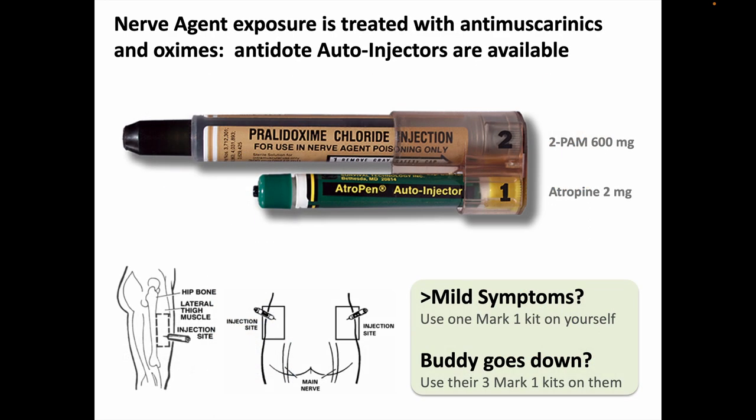Just as with the organophosphorus compound insecticides, nerve agent poisoning can be treated with anti-muscarinic drugs and oximes. For convenience and ease of use with minimal training, atropine and pralidoxime have been packaged into autoinjectors. The Mark I nerve agent antidote kit contains a 600 milligram pralidoxime autoinjector and a 2 milligram atropine autoinjector. Each individual is to be given three Mark I kits to carry if they're at risk of nerve agent exposure. The general dosing plan is for each individual to administer themselves one kit if they have more than mild symptoms of cholinergic toxicity, and if someone is severely poisoned and goes down, their buddies are supposed to give all three of the kits the victim is carrying.